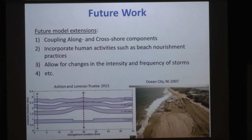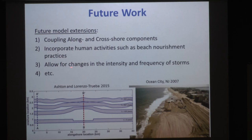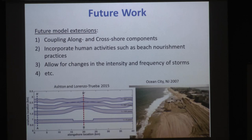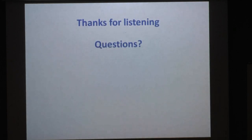We are also incorporating human activities into these models — specifically nourishment practices — to address questions such as how much and how often to nourish, providing scientific insight to decisions that are typically made politically. Additionally, we are working on incorporating variable storm events at different frequencies rather than just an average storm driving geomorphic change, with productive discussions with colleagues at USGS including Joe and Nathaniel on this topic.